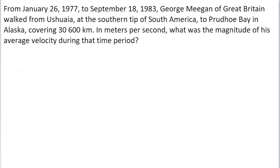This problem's asking us to find the average velocity of a guy who traveled 30,600 kilometers over the course of several years. The thing that's kind of interesting about this problem is that our time interval is given to us in the form of two dates.